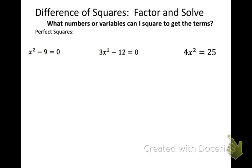Factoring is a process. After looking for a greatest common factor, we look for a difference of squares if we have two terms. The question to ask is: what numbers or variables can I square to get the terms? The first thing to remember are your perfect squares. Take a moment and write down your perfect squares from 1 to 144. To get those, you square 1, then square 2, then 3, then 4 — that way you'll have them right in front of you.